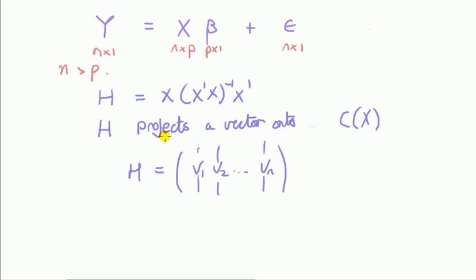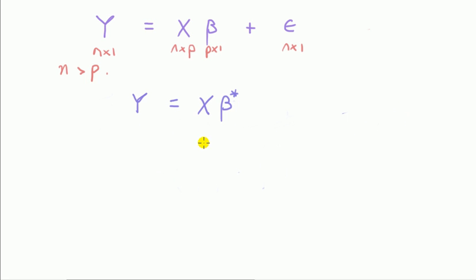So how can it end up saying that H projects it onto the column space spanned just by X? That's what we're going to address in this video. And to explain it, we have to go back to the basics of regression.